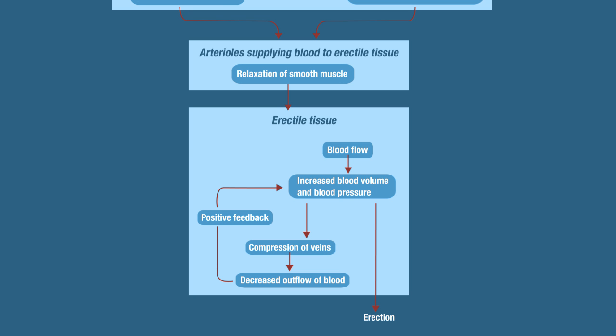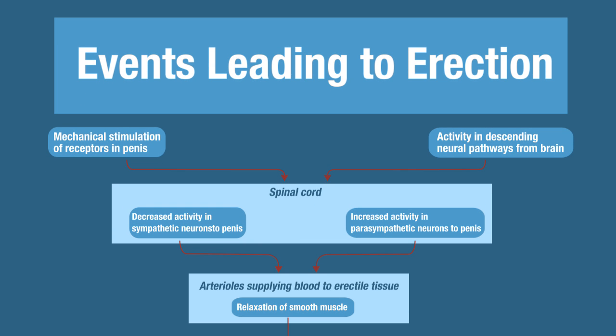One other thing to mention about parasympathetic neurons and their stimulation of the penis: in addition to relaxing the smooth muscle of the arterioles supplying the erectile tissue, the parasympathetic nervous system also causes the release of nitric oxide (NO). Nitric oxide is a potent vasodilator, providing yet another mechanism by which the arterioles supplying blood to the erectile tissue vasodilate — both direct parasympathetic stimulation and nitric oxide release contribute.